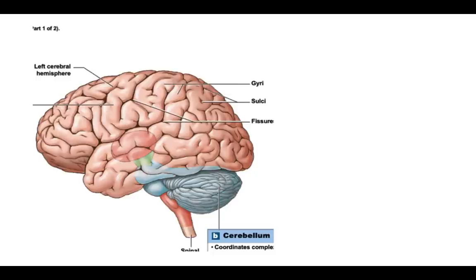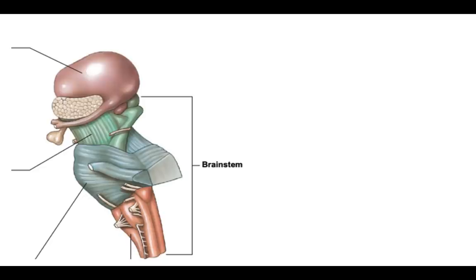The second largest area of the brain is called the cerebellum, where we adjust ongoing movements. Next we look at the diencephalon, which contains mostly the thalamus and the hypothalamus. There's also the epithalamus, which contains the pineal gland, and the pineal gland produces melatonin.